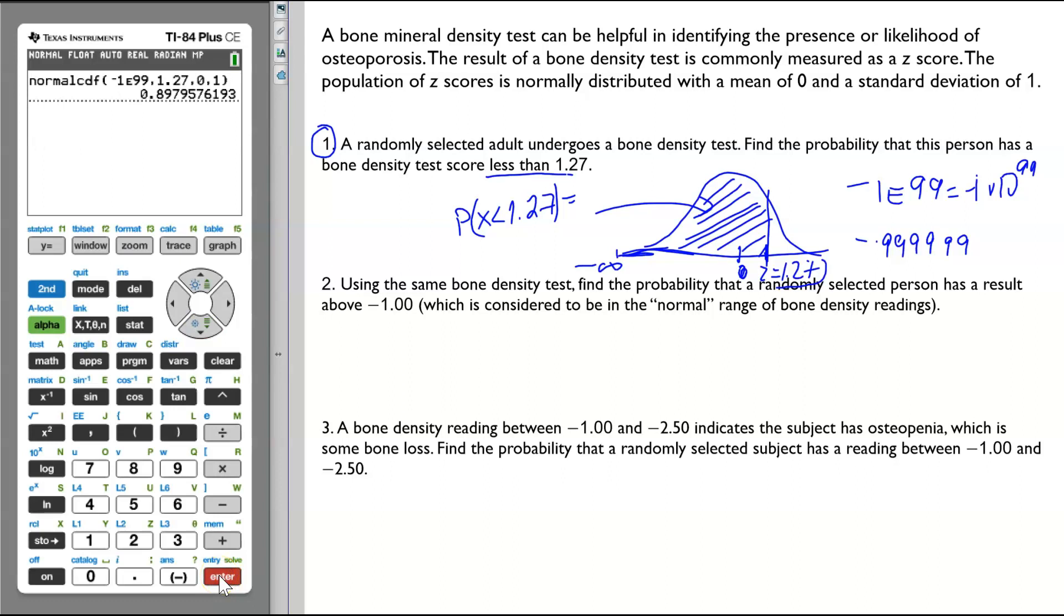The area to the left of the z-score of 1.27 is 0.89795 rounded to 4 decimals will be 0.8980.